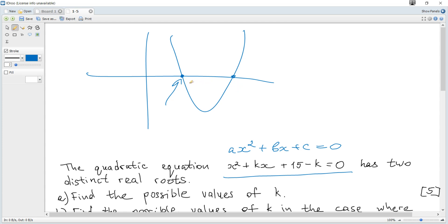And if two roots are positive, the smaller root must be greater than zero.